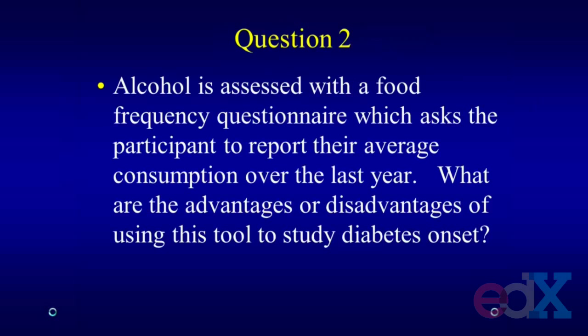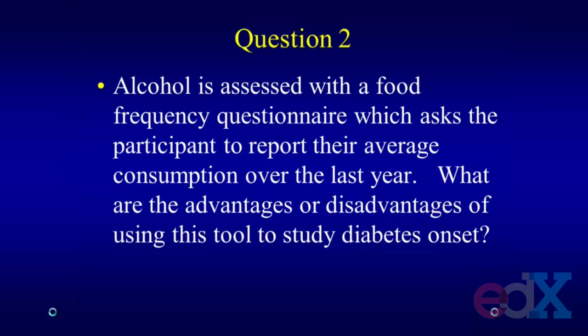Let's go on to question two, which leads on from question one. Alcohol is assessed with the food frequency questionnaire, which asks the participant to report their average consumption over the last year. So what are the advantages or disadvantages of using this tool to study diabetes onset? The first advantage is it's a well-validated questionnaire that captures average intake. You have to be a little careful about throwing around the term 'validated,' because it implies a degree of how well it measures alcohol.